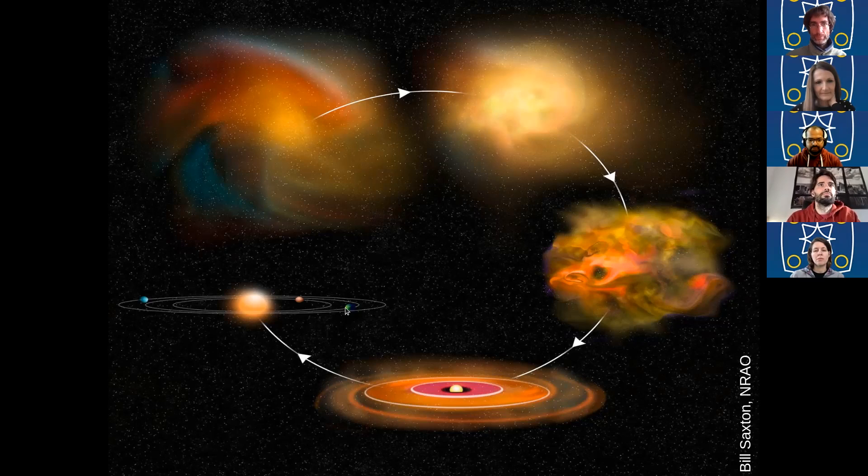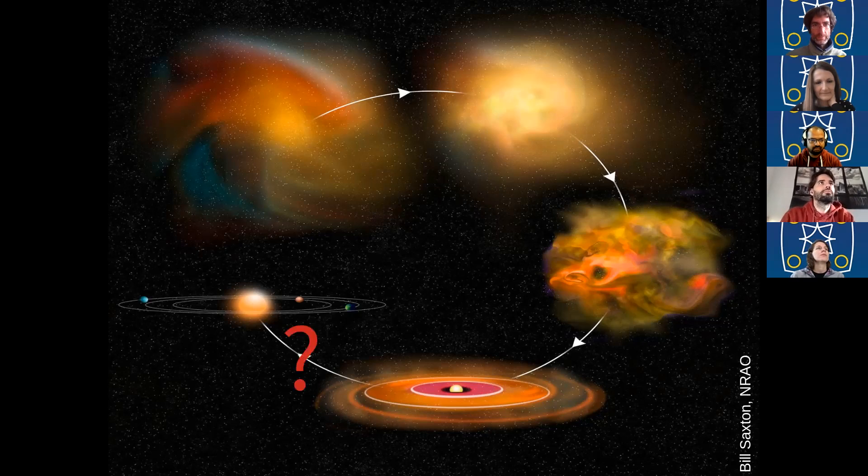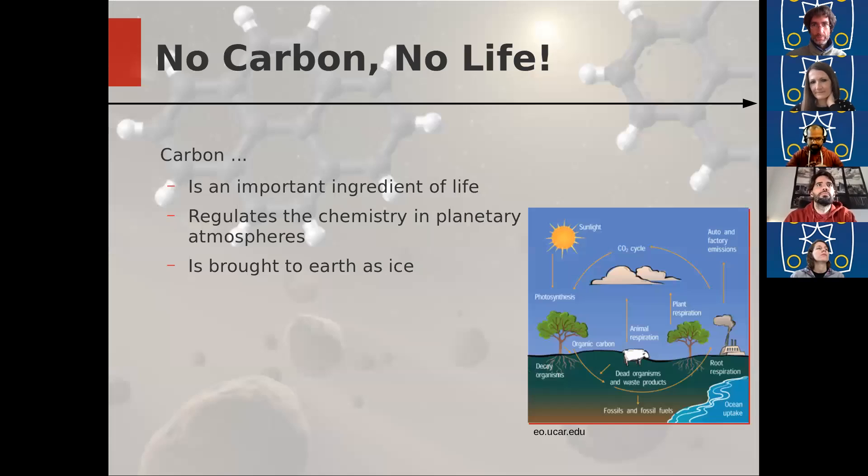And I'm particularly interested in this step, how we get from a protoplanetary disk to planets and how we get molecules actually from those protoplanetary disks to planets. And the key role plays carbon because we cannot imagine life without carbon. It is a backbone of many biomolecules. And besides of that, it regulates the chemistry in planetary atmospheres. Think of the CO2 and methane that regulates the temperature on Earth.